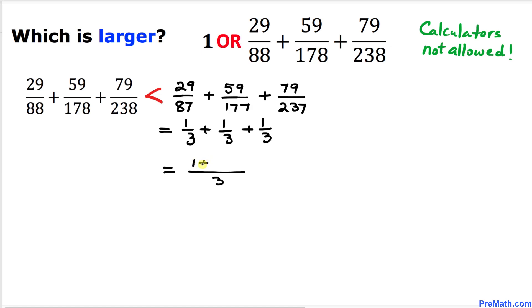On the top, the numerator is going to be one plus one plus one, so that is going to give us three over three, which is the same as one.